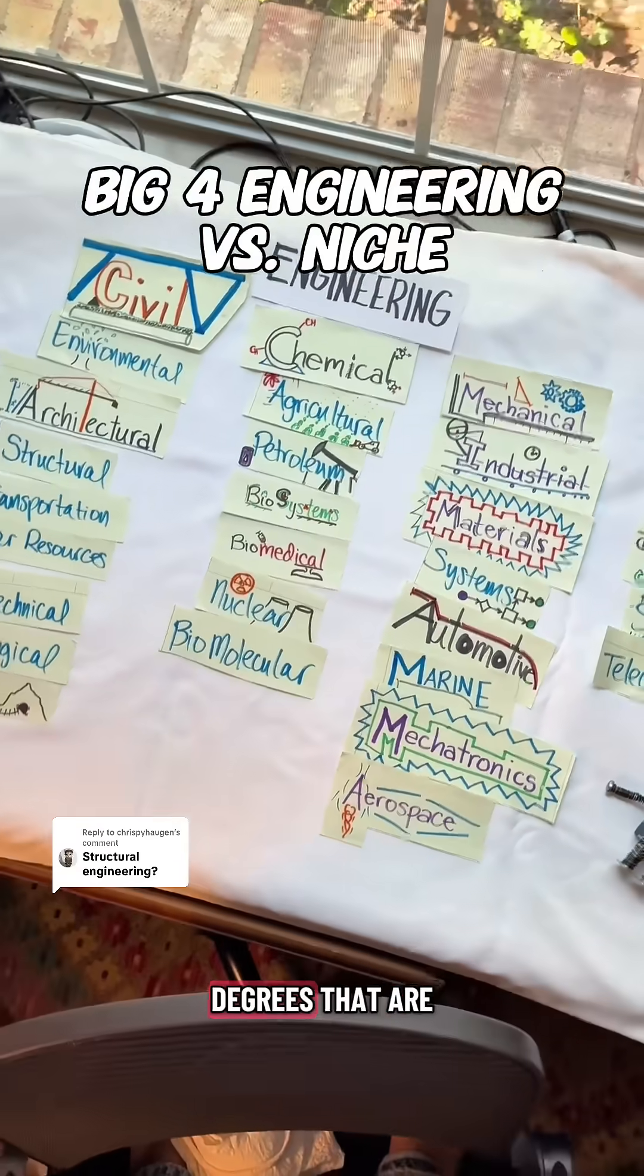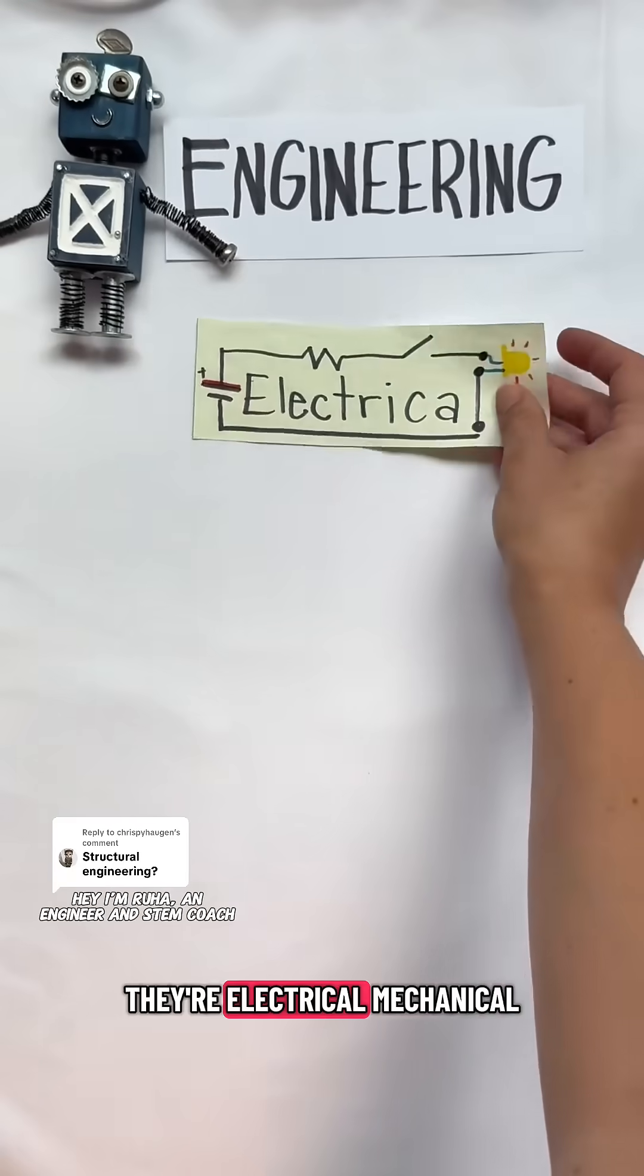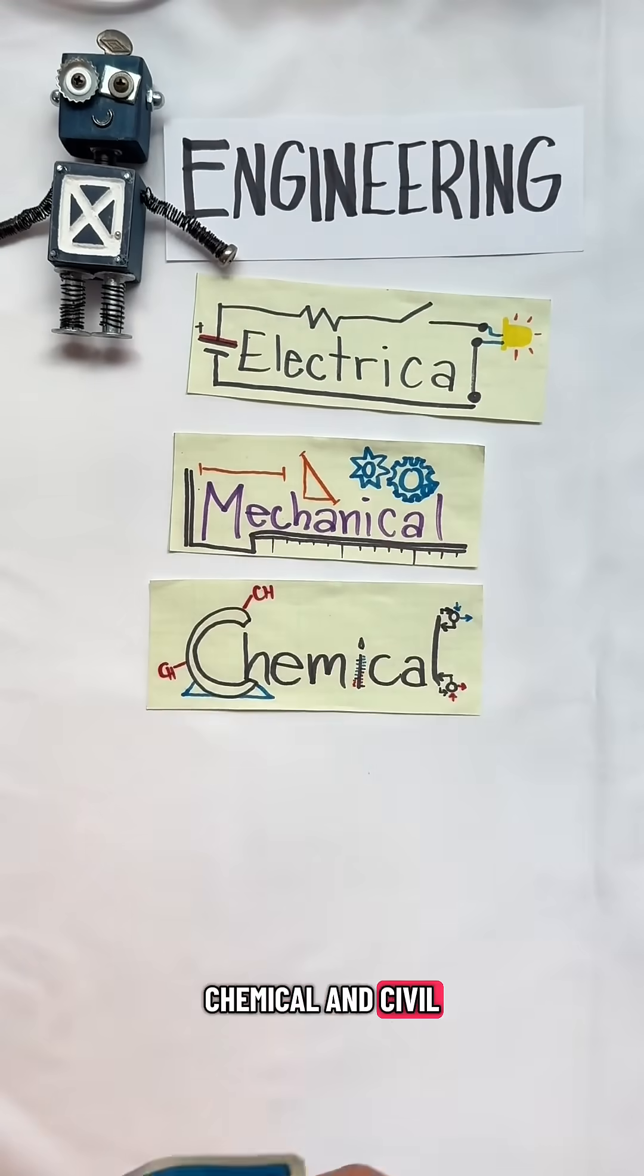In engineering, there are four broad degrees that are known as the big four. They're electrical, mechanical, chemical, and civil engineering.